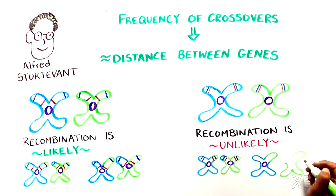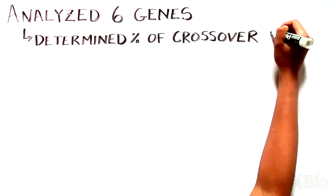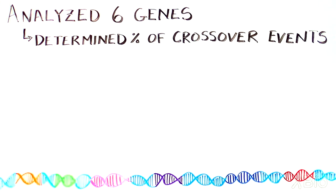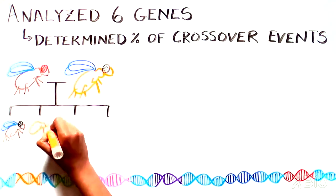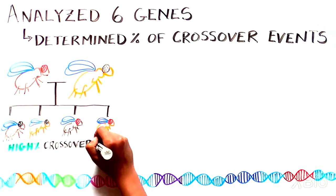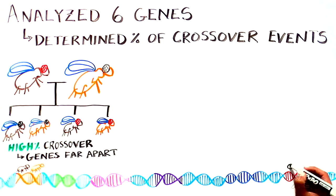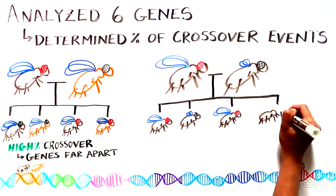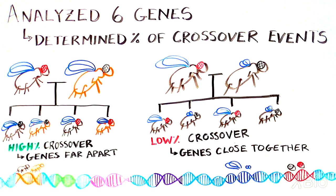Then Sturtevant analyzed six different genes that he knew were all found on the same chromosome. He determined the percentage of crossover events that occurred by looking at specific features in the offspring when he bred different types of flies. The higher the percentage of crossing over, the farther apart the two genes were on the chromosome. And the lower percentage of crossing over, the closer the two genes were. By this method, Sturtevant deciphered the order of the six genes on the chromosome and approximately how far apart each one was from the other. This amazing finding established that chromosomes are linear and that the genes are organized within each chromosome in defined positions.